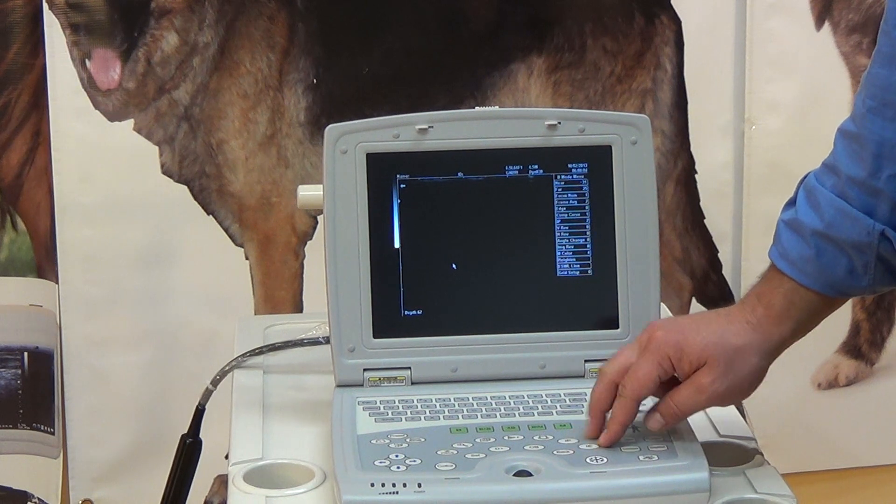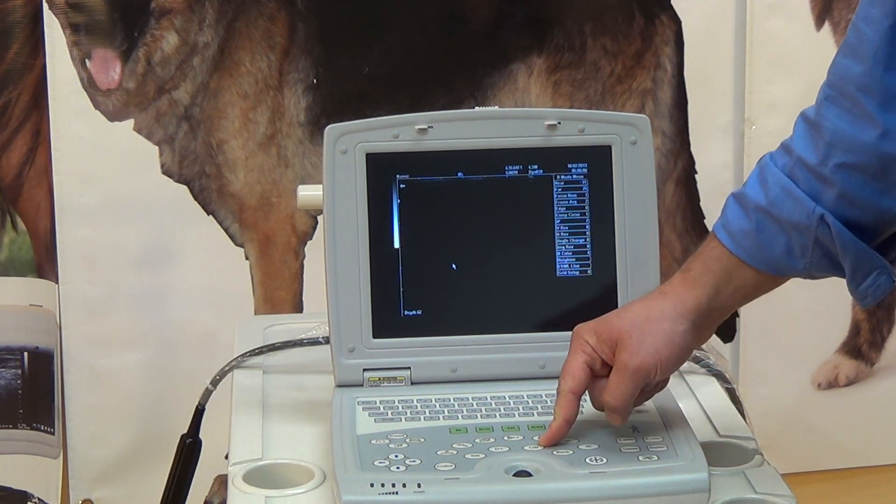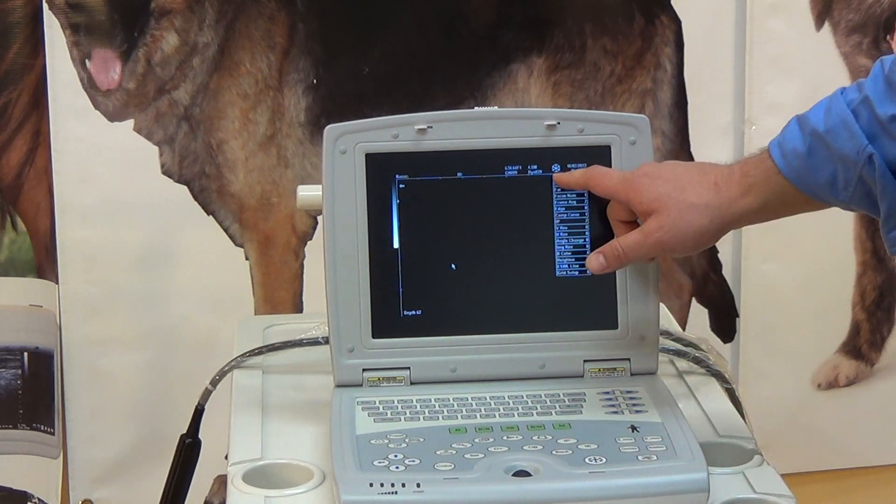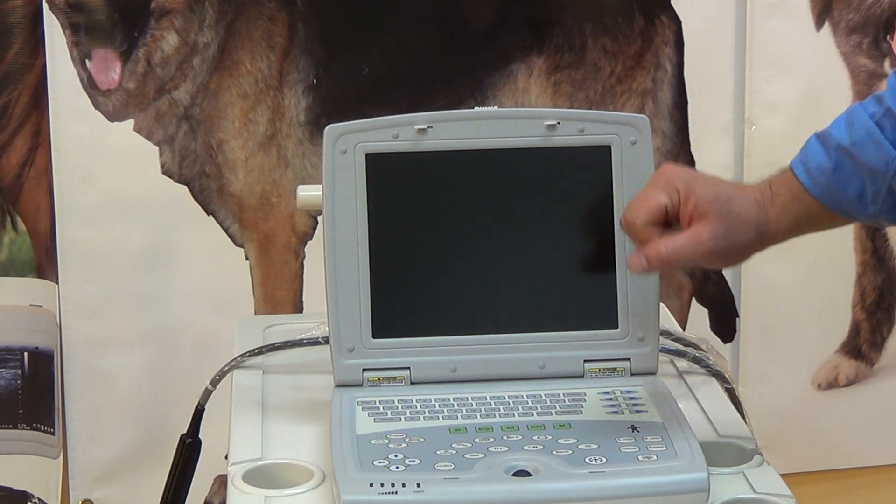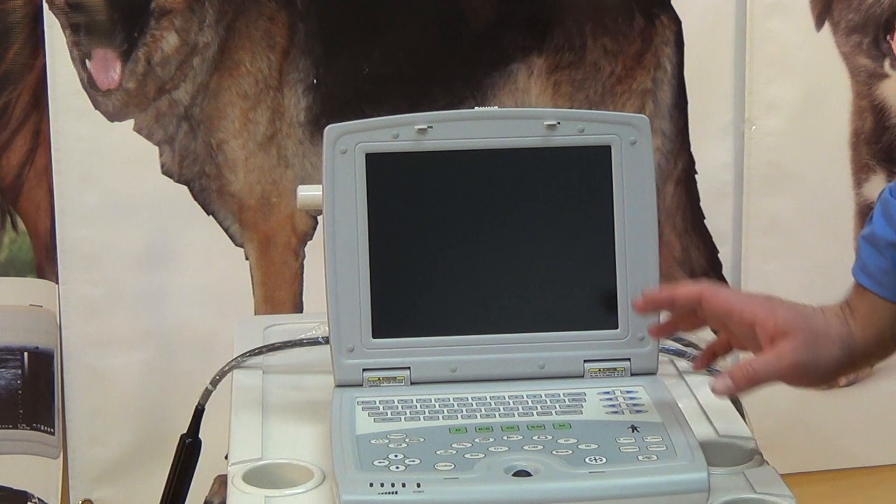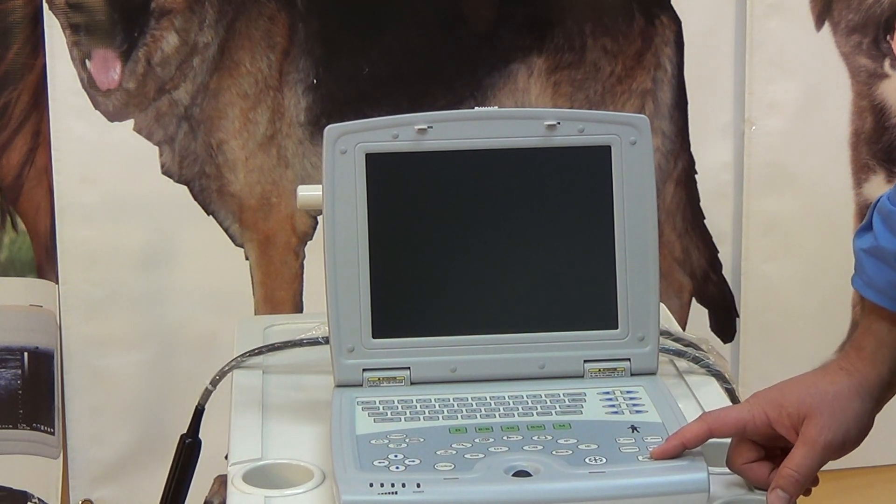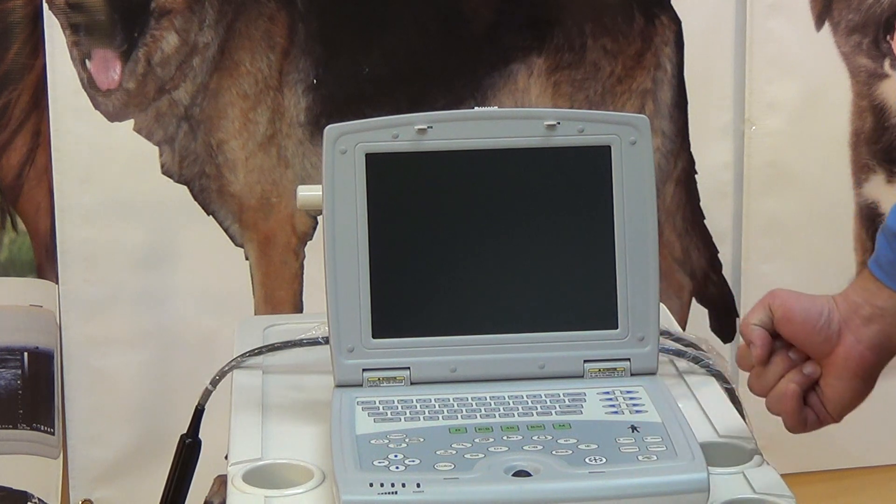You also have an OB calc package, and here's our freeze button, and you can see when it's frozen by the snowflake. Aside from that, we have our standard print button, and that's used for saving the images, self-explanatory.